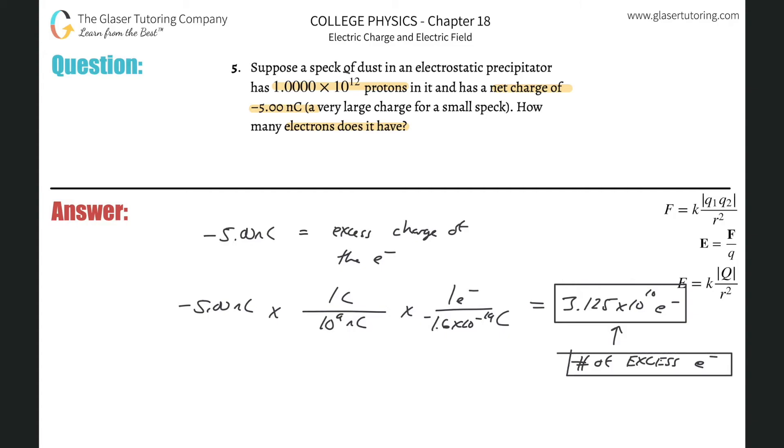So now, if this thing had 1 times 10 to the 12 protons, we have 1 times 10 to the 12 protons. And we know at a minimum then, since there is a net negative charge, that at a minimum there had to have been also 1 times 10 to the 12 electrons.